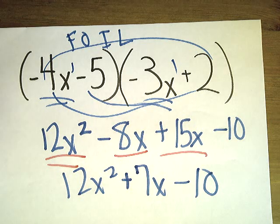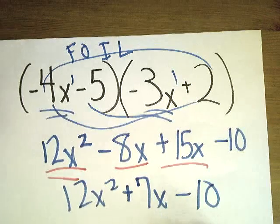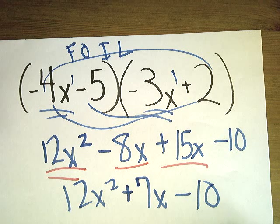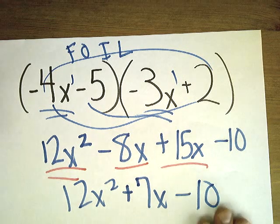Mark them up like we did for adding and subtracting. So negative 8 plus 15 would be positive 7x. Bring everything else down to give me the final answer of 12x squared plus 7x minus 10. Hopefully that'd be the right answer, otherwise it'd be really annoying for you because you're paying me to teach you. Let's look at another one.